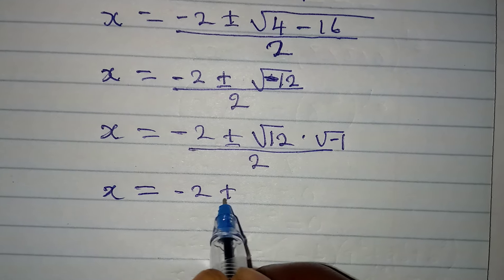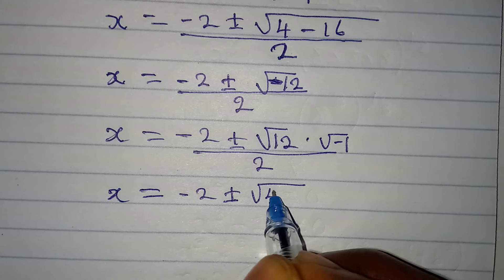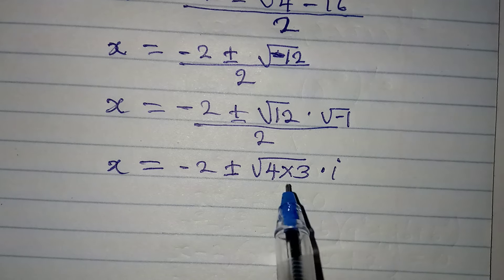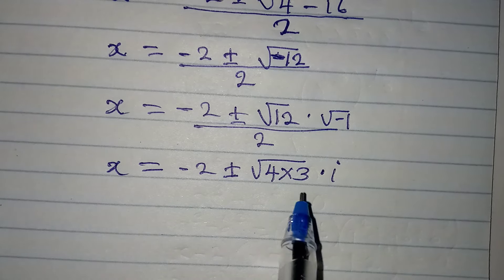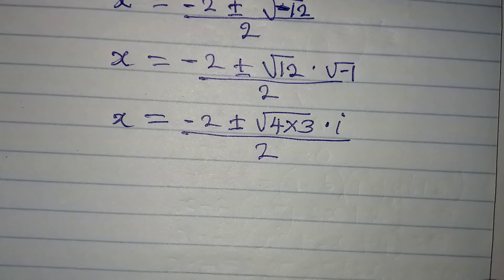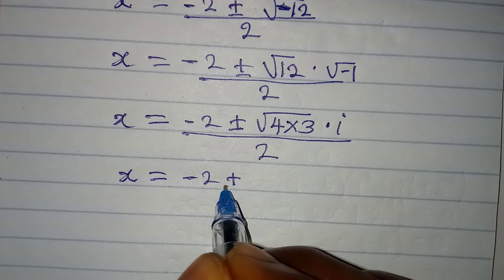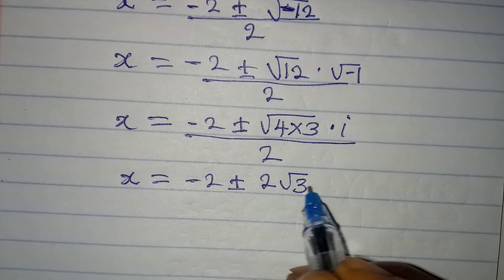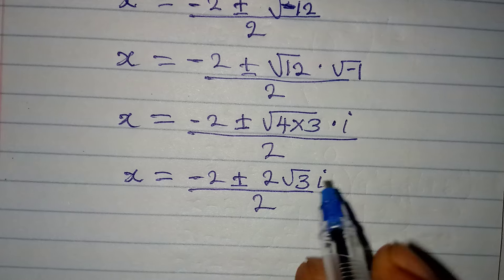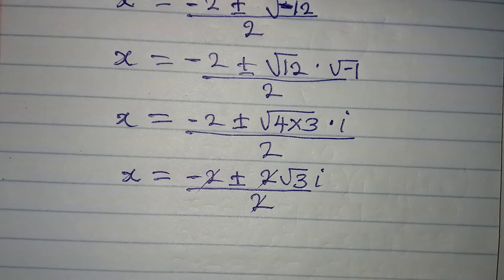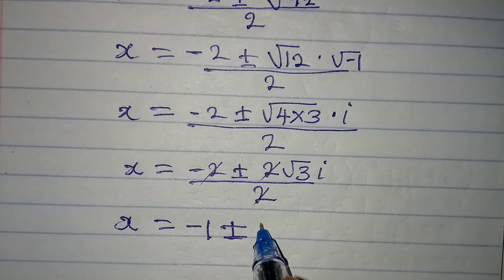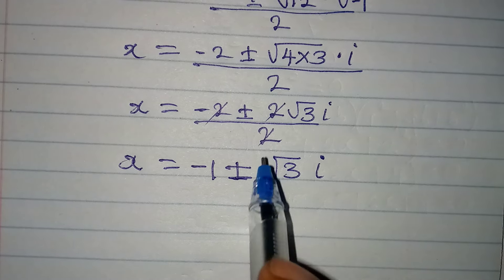Now, 12 is the same as 4 times 3. I chose 4 times 3 rather than 6 times 2 because 4 is a perfect square factor of 12. So the square root of 4 times 3 times i, all over 2, gives us: the square root of 4 is 2, so we have minus 2 plus or minus 2 times the square root of 3 times i, all over 2. Dividing through by 2, this simplifies to minus 1 plus or minus the square root of 3 times i.